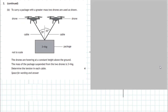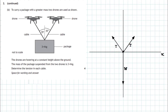Question 2b: to carry a package with a greater mass, two drones are used. The drones are hovering at a constant height above the ground and the mass of the package suspended from the two drones is 3.4 kilograms. We need to determine the tension in each cable. We let a dot represent the package in an xy axis and draw the force vectors acting on it — a free body diagram. The weight acts vertically downwards and the two tension forces from the cables act at 35 degrees to the vertical.